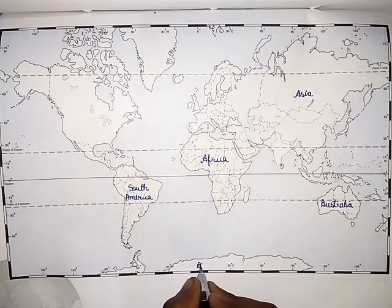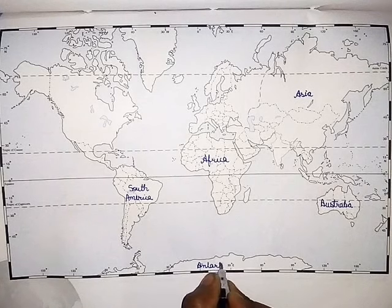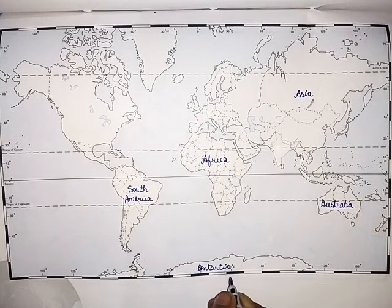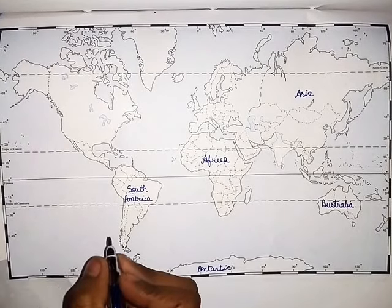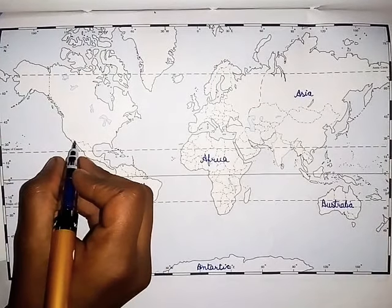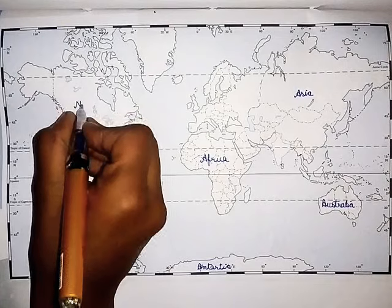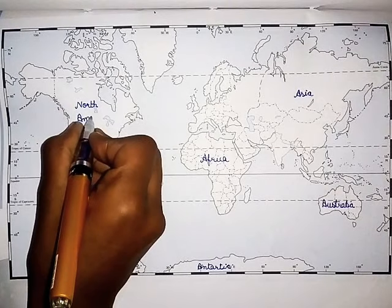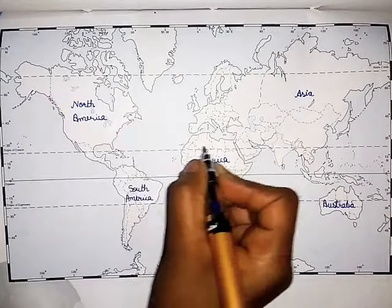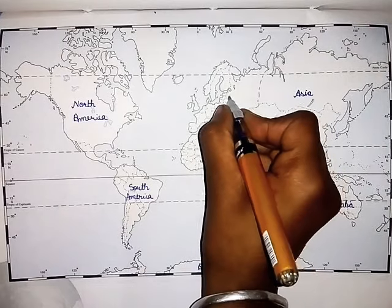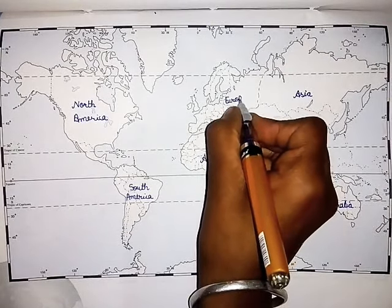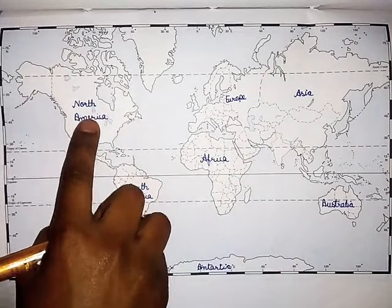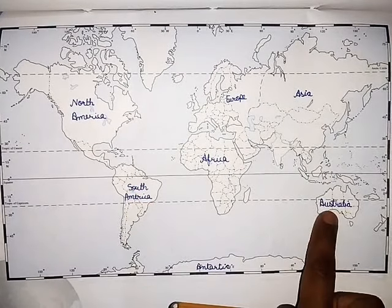This is Antarctica. And Asia and Europe. We have 7 continents: 1, 2, 3, 4, 5, 6 and 7.